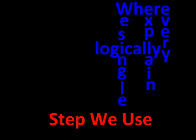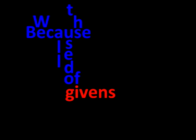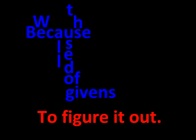And then arguments and words is something we've got through, where we logically explain every single step we use. And when we're done you know that we're convinced beyond a doubt because we used all of the givens to figure it out.